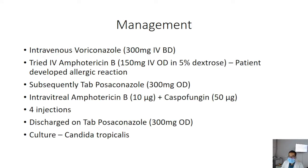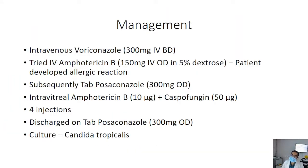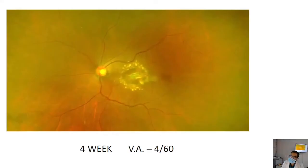A provisional diagnosis of Candida endophthalmitis was made. In management, we started both systemic and intravitreal antifungal agents. Intravenous voriconazole was given. IV amphotericin B was tried but the patient developed allergy to it, so tab posaconazole was tried. The most important part of therapy was intravitreal combination therapy of two antifungal agents: amphotericin B 10 micrograms and caspofungin — a total of four injections given at intervals of 48 to 72 hours. The patient was discharged on tablet posaconazole, and culture identified Candida tropicalis. At four-week follow-up, visual acuity had improved to 4/60.